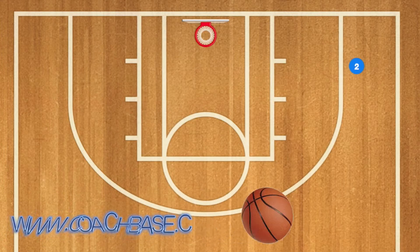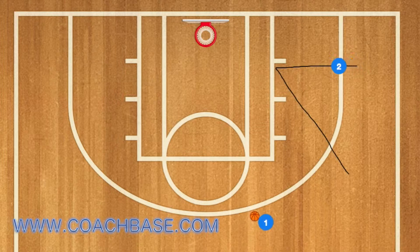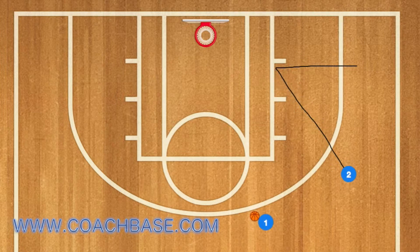Today we're going to talk about cuts in basketball. Why do players cut to get open? Let's go over the different cuts there are in basketball. First is a V cut. Player 2 is going to run in a V to get open. Very simple, very basic. This is the first cut you should teach a young player.